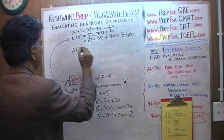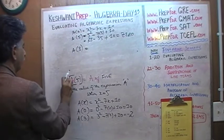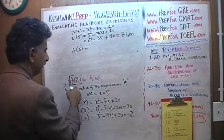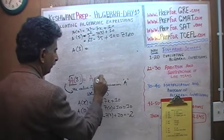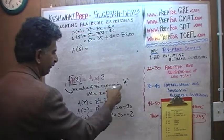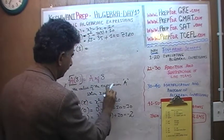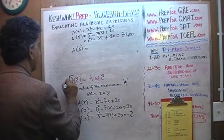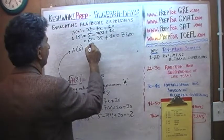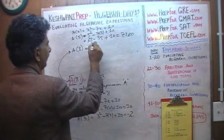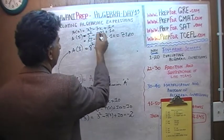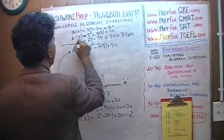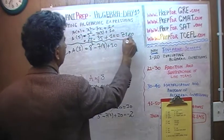Now we are doing A(8) — the value of the expression A when x equals 8. We replace x by 8: 8 squared minus 7 times 8 plus 10. Let's put a demarcation here so we can keep it separate.